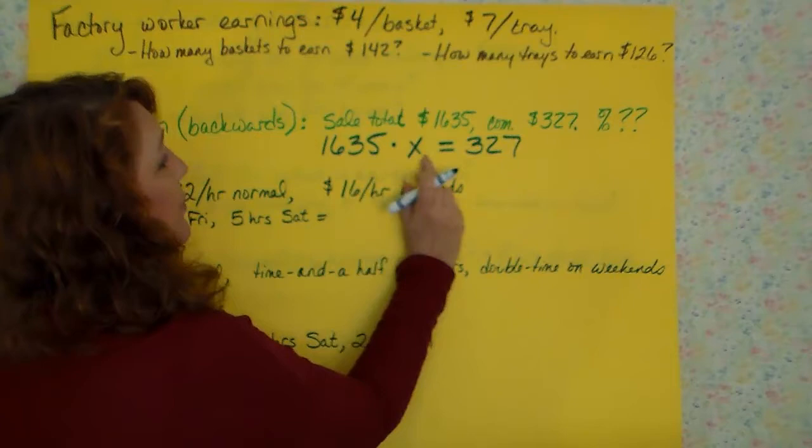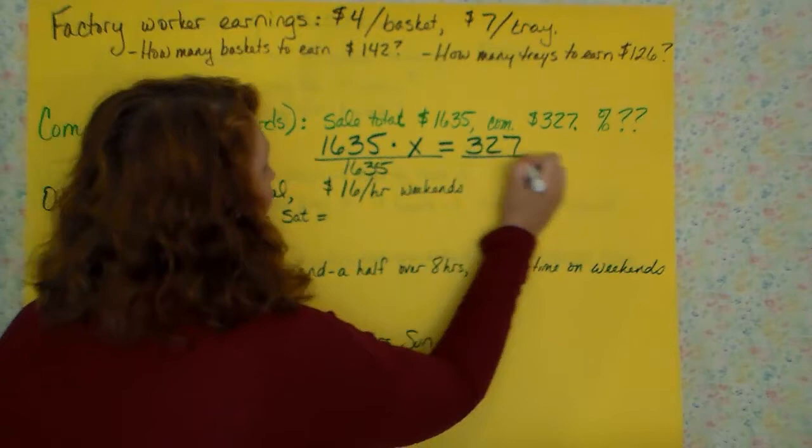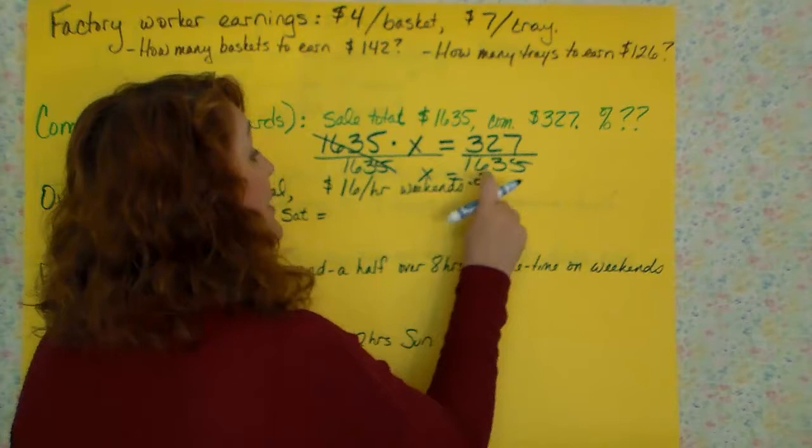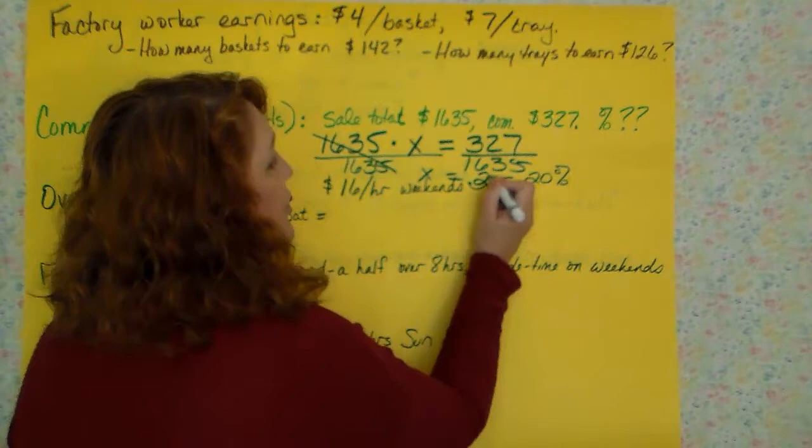I've got a number multiplied to my variable. To get rid of it, I've got to do the opposite. I'm going to divide by that number. But I've got to divide this side too to get rid of these. And x equals 20%. You're actually going to get 0.2. But you know that this is a percent problem. That's going to be 20% because you're going to move your decimal over two times to make it a percent.